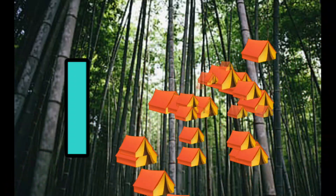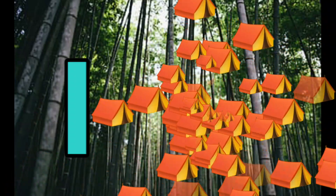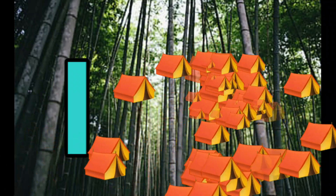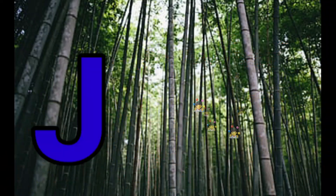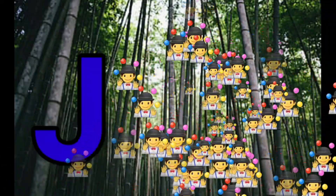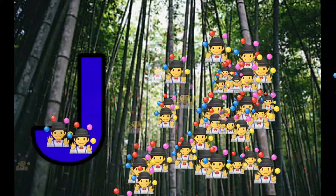I is for Igloo. I-I-Igloo. J is for Jump. J-J-Jump.